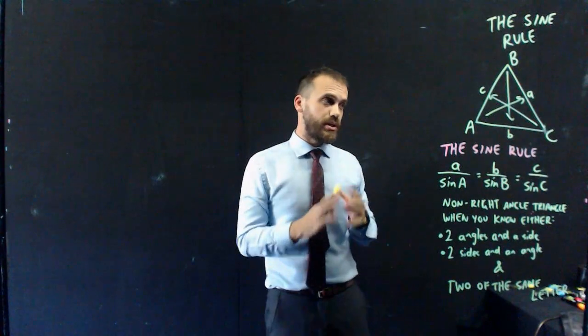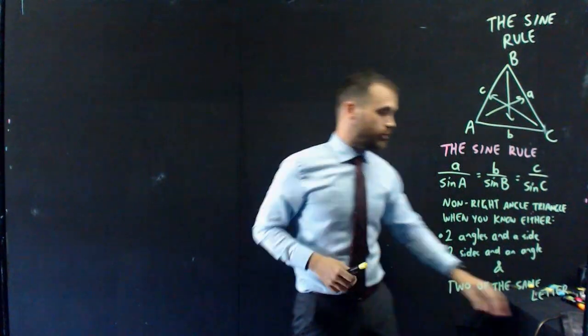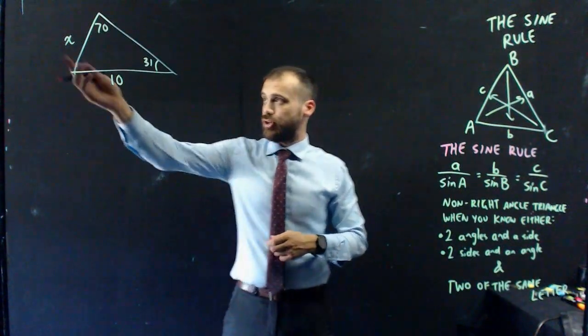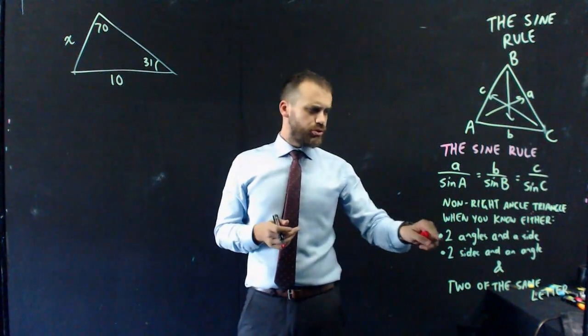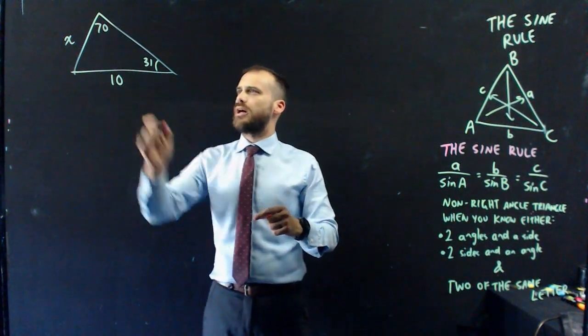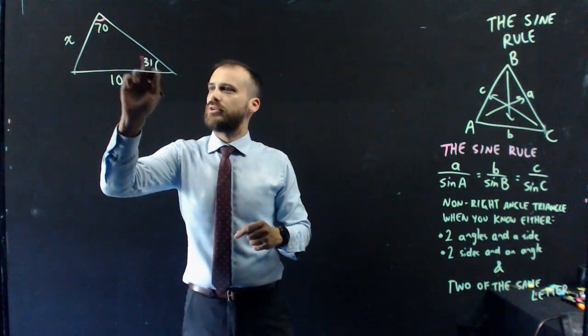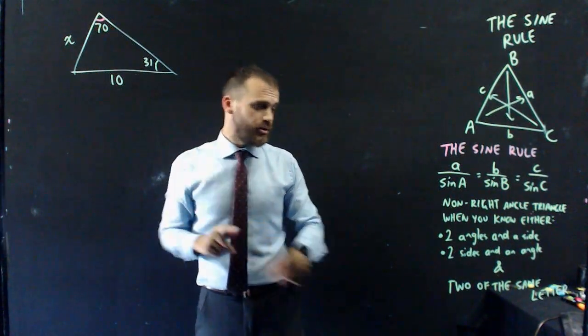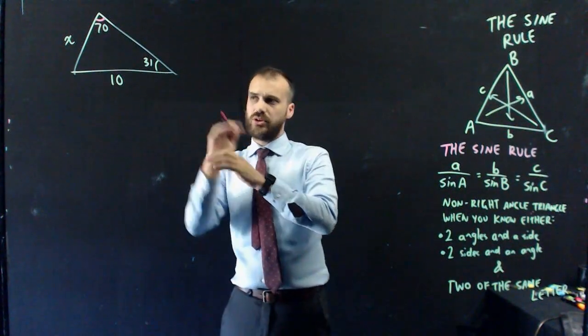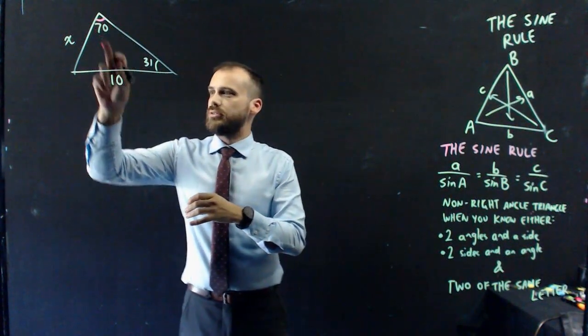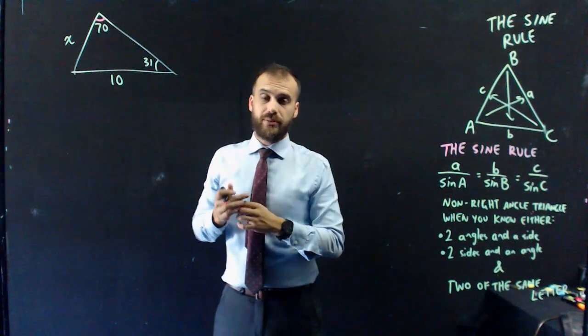Let's do two quick examples of the sine rule. Here's my first example. I'm going to try to find x. First of all, is it a sine rule question? Do I know two angles and a side? Yep, I know two angles, and I know one side, and two of the same letter. As in, is one angle and one side opposite each other? Angle, side, opposite each other. That's going to be the same letter.